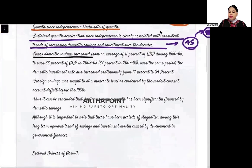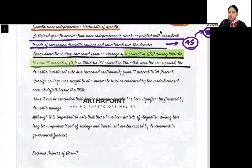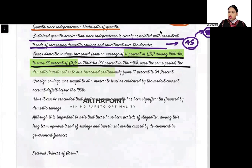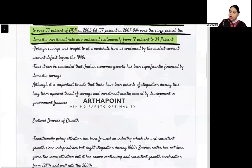Gross domestic savings increased from an average of 11% of GDP to over 33% of GDP, reaching 37% in 2008. So savings increased from 11% of GDP to 33% of GDP. Similarly, the domestic investment rate also increased from 12% to 34%.